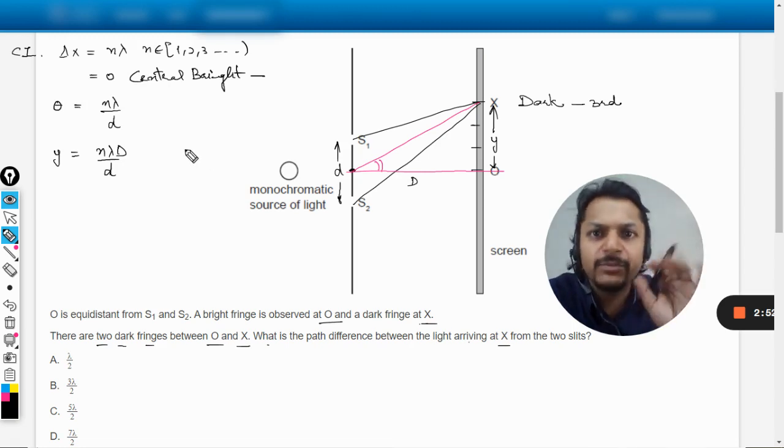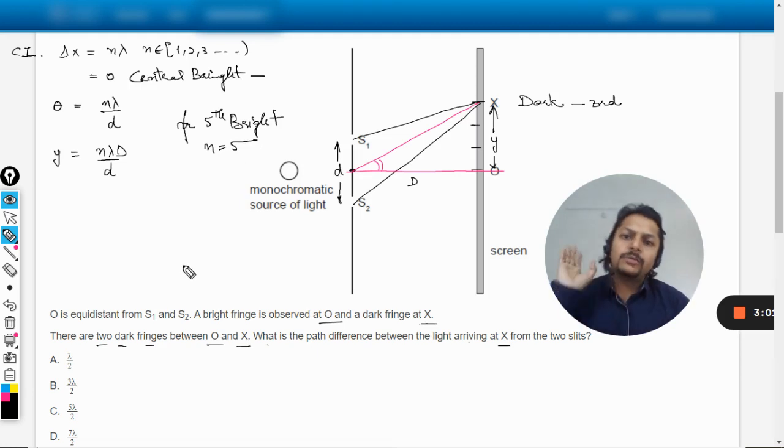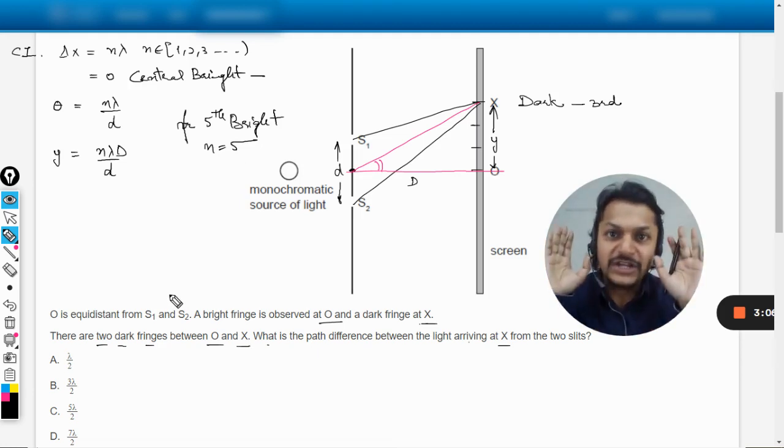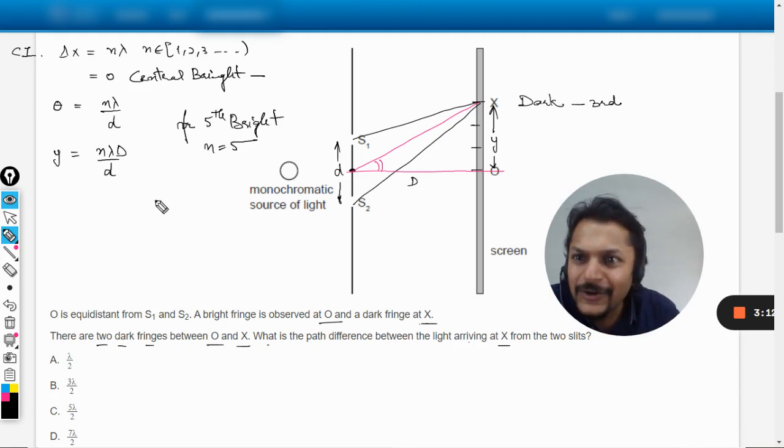Things should be very clear, no doubt about it, and there is no confusion here. For fifth bright fringe you just substitute n equals 5. I want you people to take the screenshot of this, because I know I'm going to remove this thing. I would be telling you about the destructive interference now.